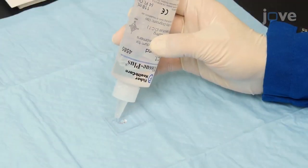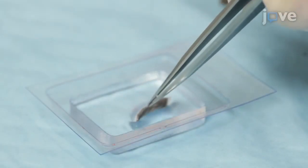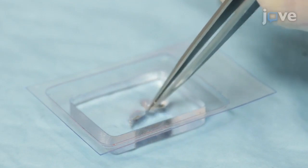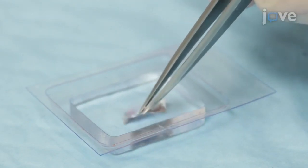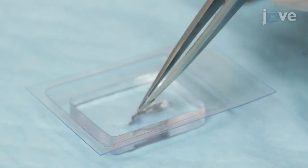Next, fill the cryomold with freezing reagent compound. Using needle-nosed forceps, place the skin sections into the filled cryomold. Orient the skin sections so that the cross-section from the epidermis to the dermis, hypodermis, and muscle is visible.